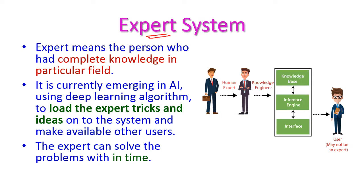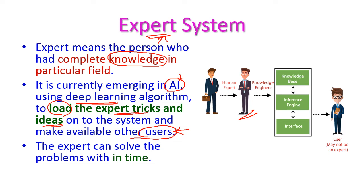Expert system. An expert is a person who has complete knowledge about a particular field. This is an emerging trend in artificial intelligence. Many different deep learning algorithms are used to find the expert's tricks and ideas to solve a particular problem. After that, those tricks are loaded into the system and made available to other users. The knowledge engineer or the expert uploads their ideas and tricks to the system, making them available to users who may not themselves be experts, so that anyone can solve a problem in time with much time saved.